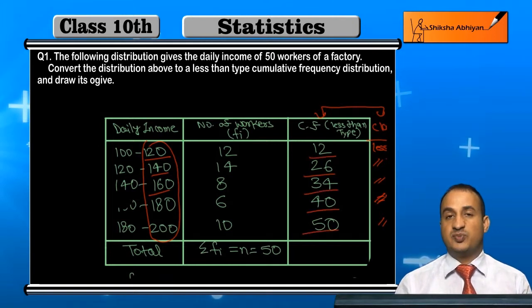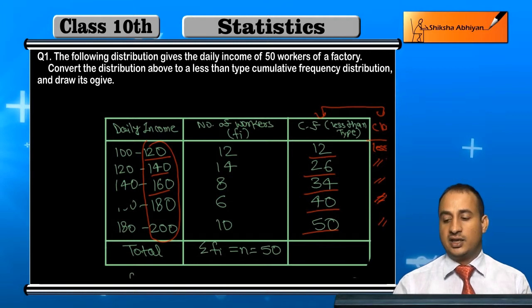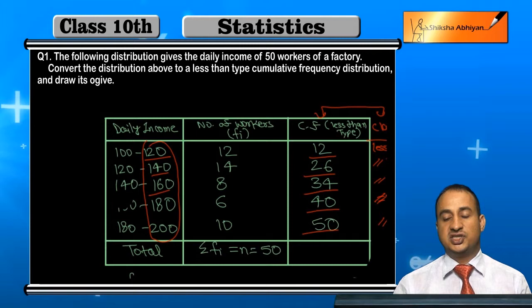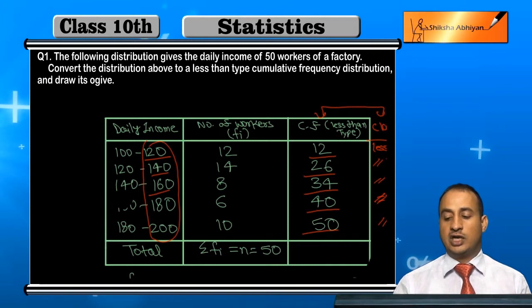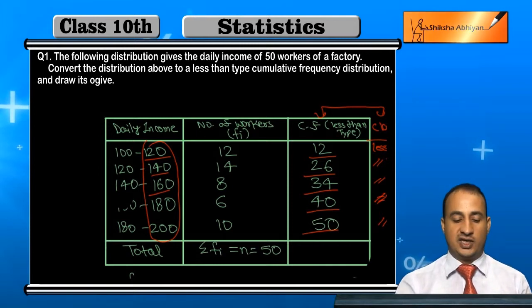On the x-axis we will draw the daily income: less than 120, 140, 160, and so on. On the y-axis we have the cumulative frequency values: 12, 26, 34, 40, and 50.